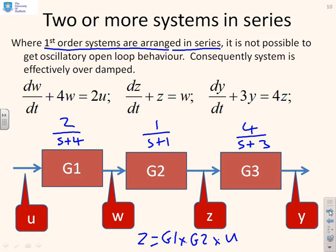The key point of this slide is to say, when you've got systems in series, and those systems have real poles, the corresponding system for everything together will still have real poles, so it will be overdamped. Generally speaking, systems in series have overdamped type characteristics.